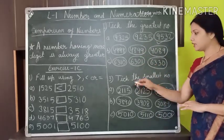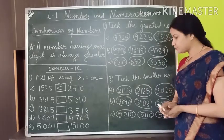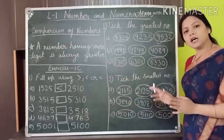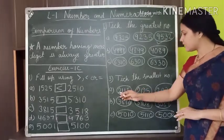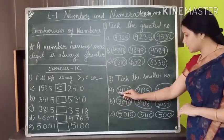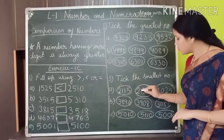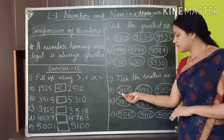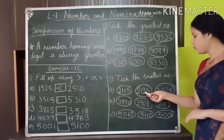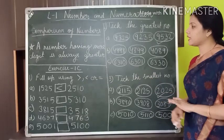The third question is: tick the smallest number. Again three options are given and we have to find the smallest. All numbers are of 4 digits. We start with the leftmost digit: 2, 2 and 2 — all same. We jump to the next digit: this is 1, this is 1, and this is 0. Since 0 is smaller than 1, we tick that number as the smallest.